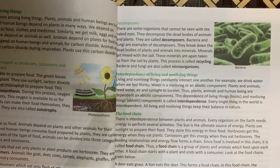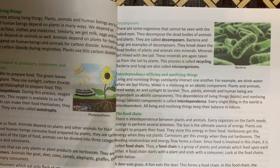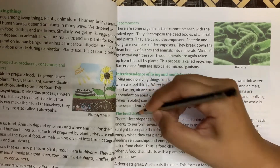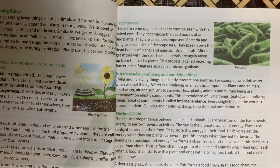Living things and non-living things are both dependent on each other. Living things need air, water, and sunlight — and all of these are non-living things. This means every living thing is dependent on non-living things. Now we will read about the next topic: food chain. Check out page number 41.